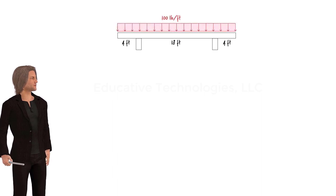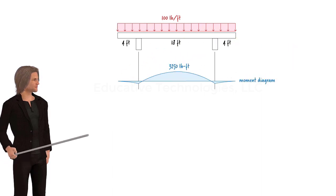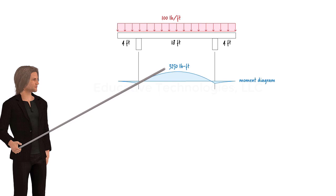exerting a uniformly distributed load of 100 pounds per foot on the beam. If we draw the beam's moment diagram, we find that the maximum bending moment is at the midpoint of the span. The magnitude of the moment is 3,250 pound-feet.